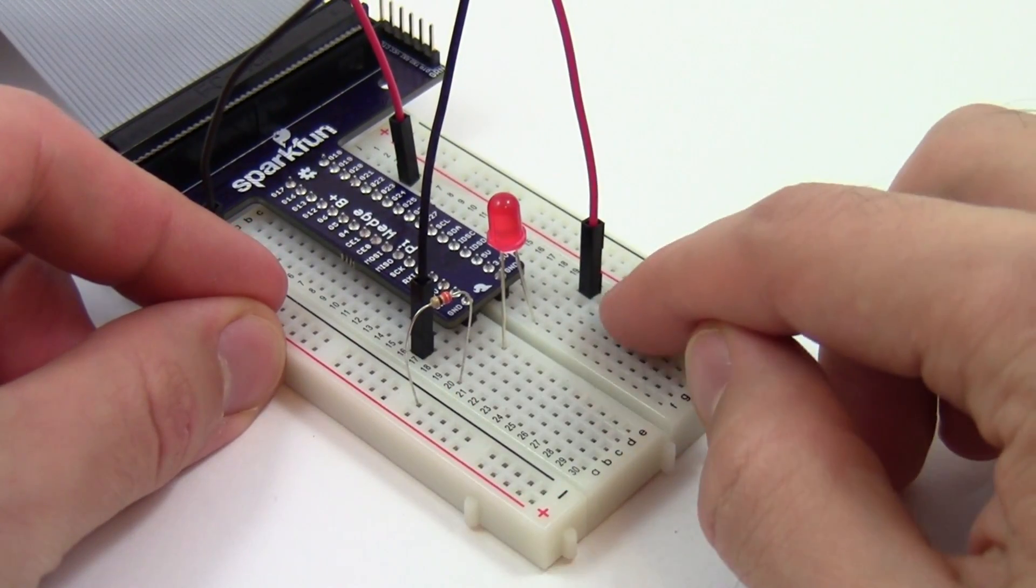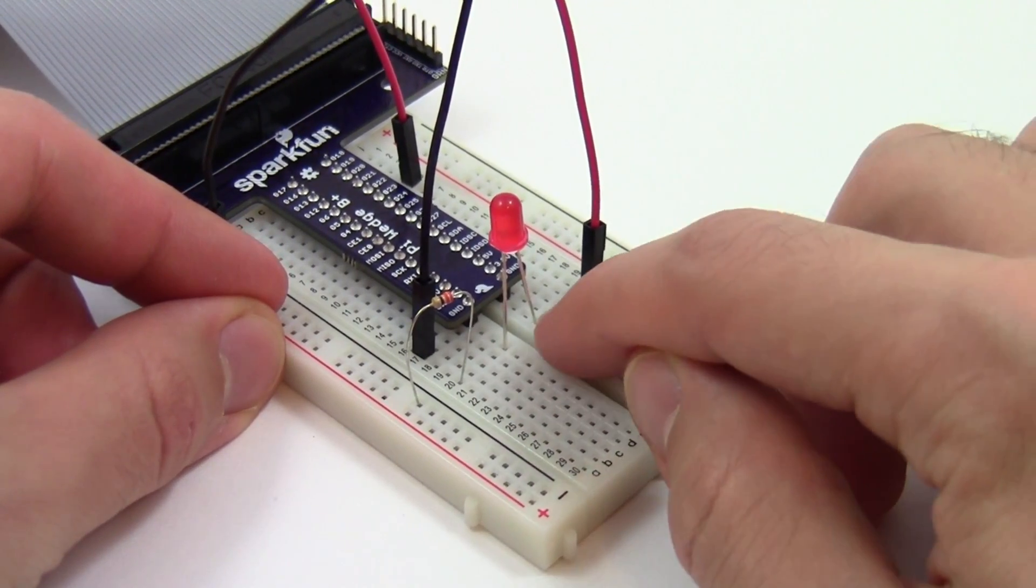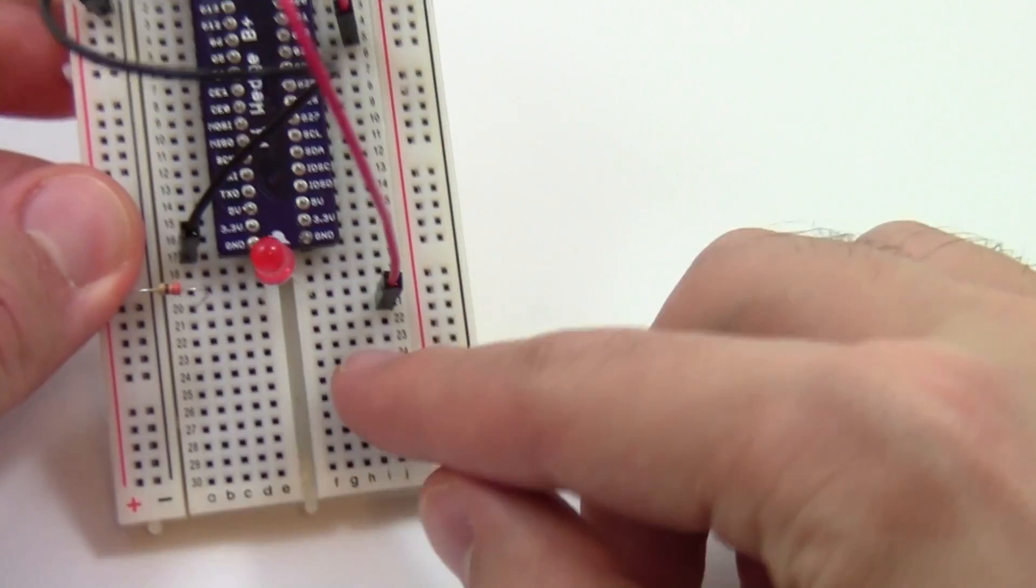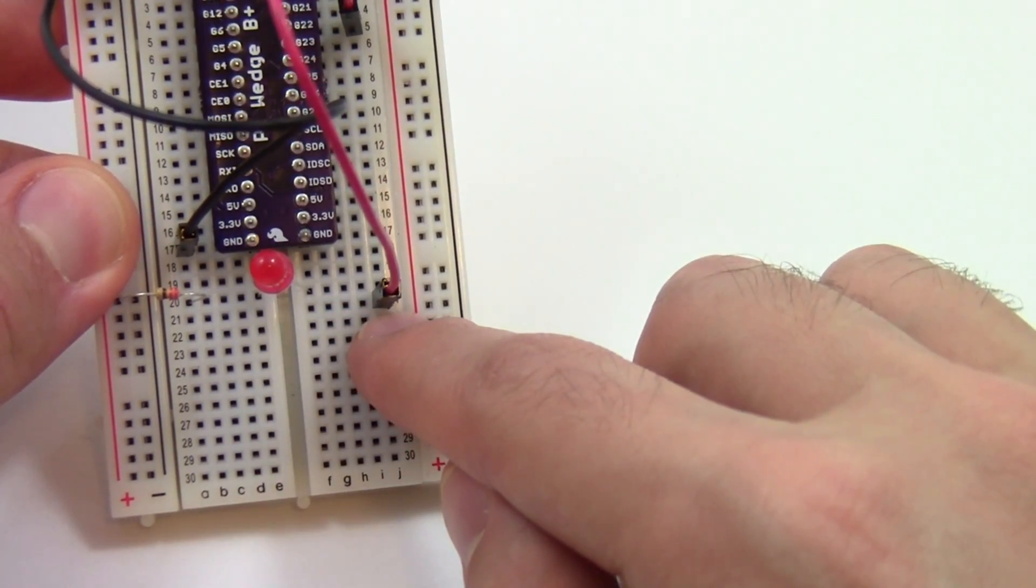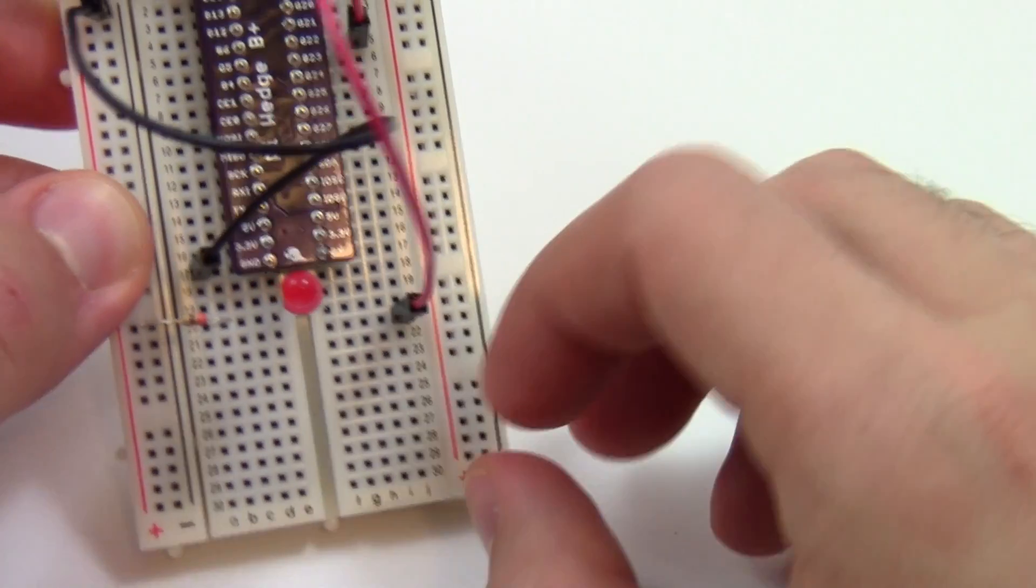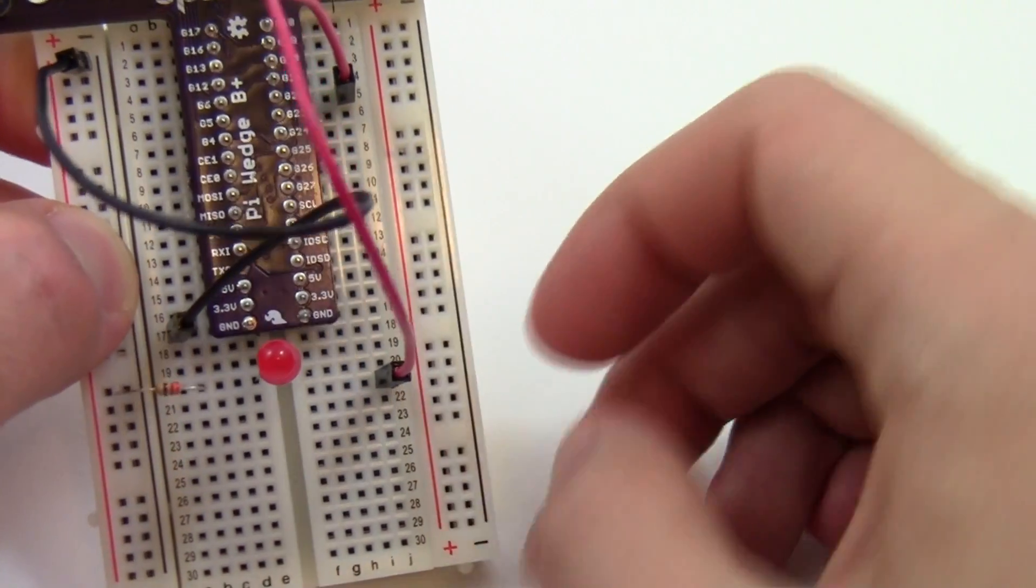So if you just look at a glance, it might look like this jumper wire is in the right row, but if you look very closely, you'll see that the LED is actually in row 20 and the jumper wire is in row 21. This goes for all of your components for your entire circuit.